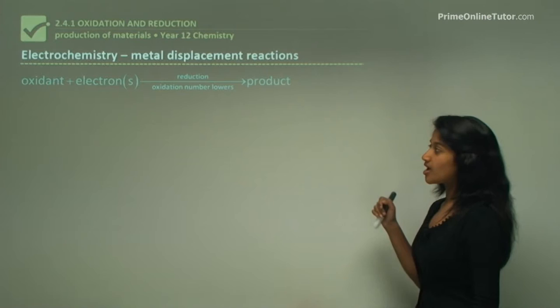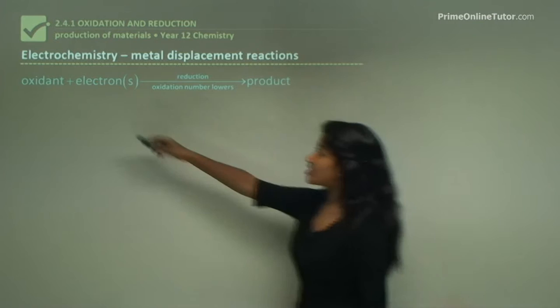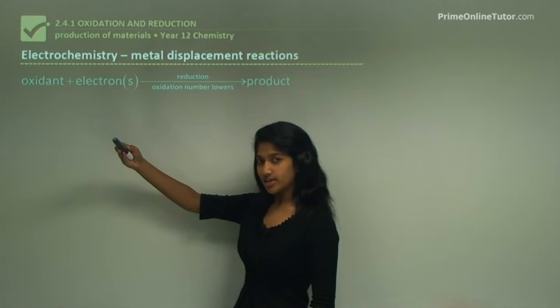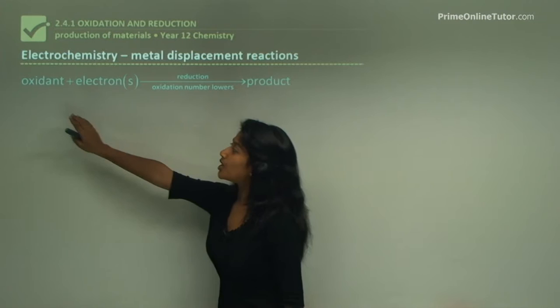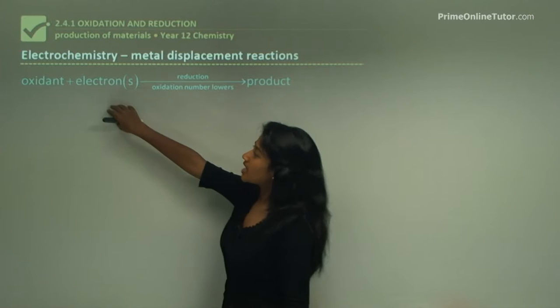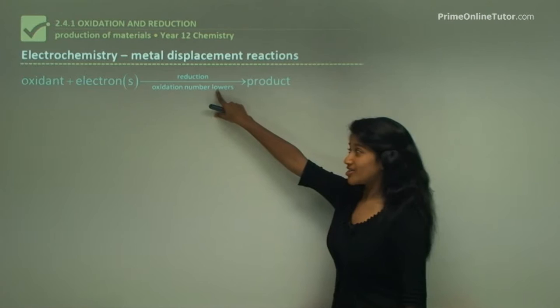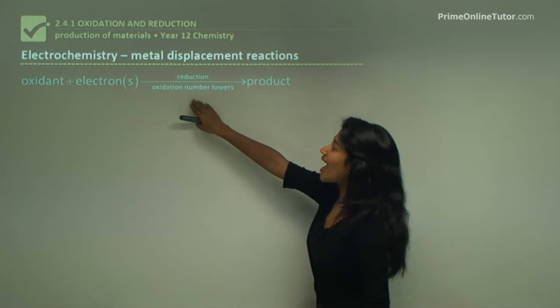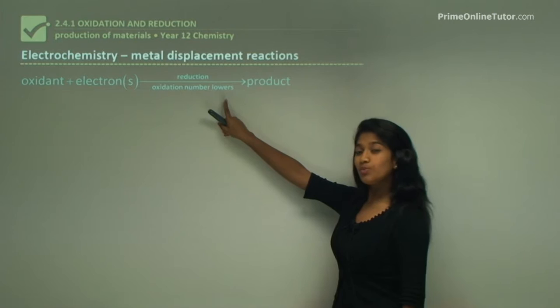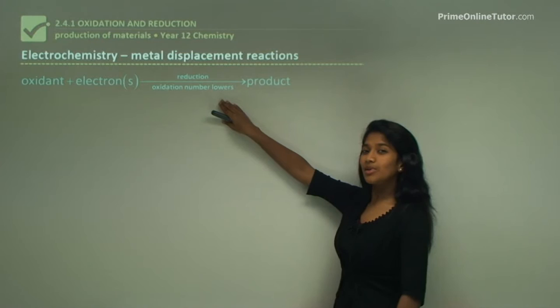This is a reduction reaction where the oxidant gains an electron. It may gain more than one electron depending on valence shells - for example, a zinc ion would gain two electrons while a sodium ion would only gain one. The oxidant would undergo reduction, and when undergoing reduction the oxidation number lowers.